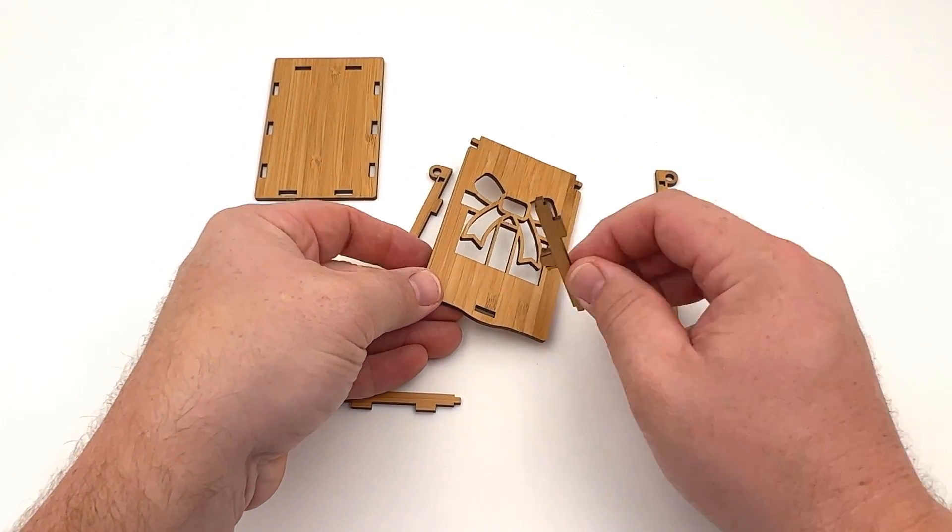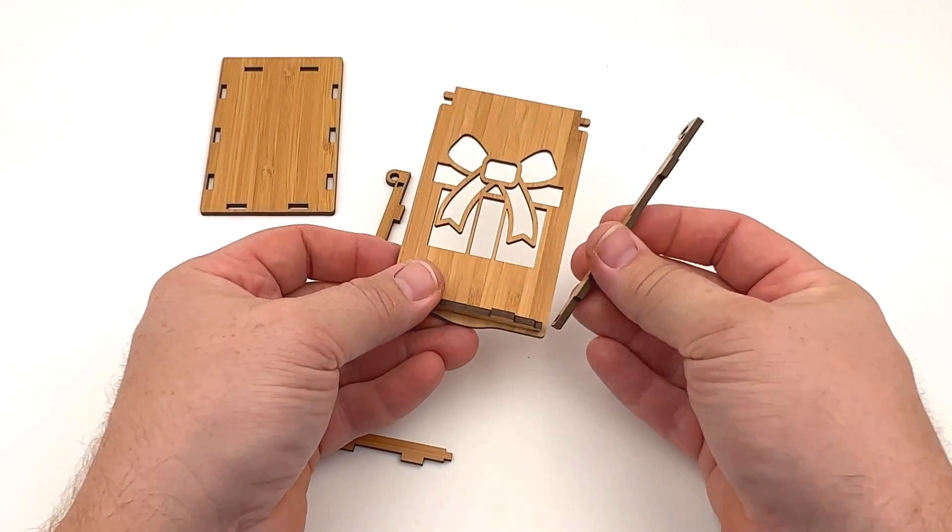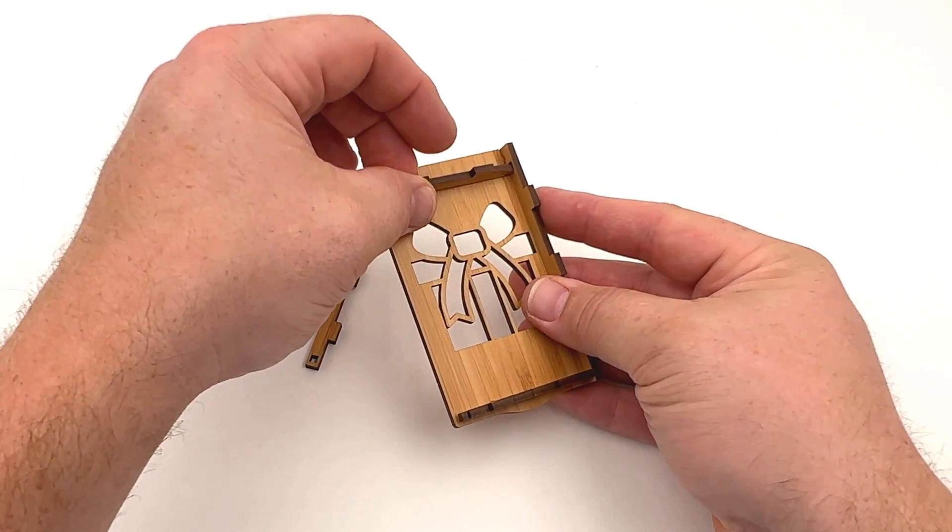The box needs to be assembled upside down, placing all four side parts onto the backside of the top plate first.